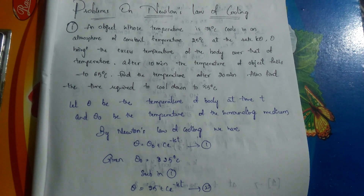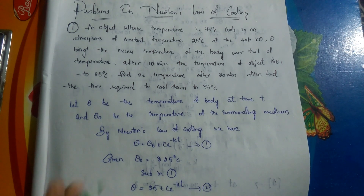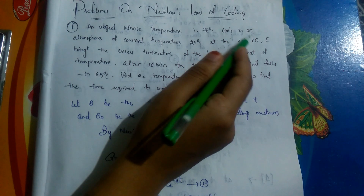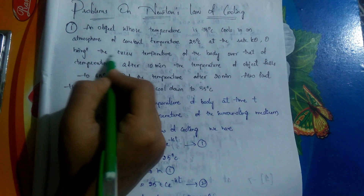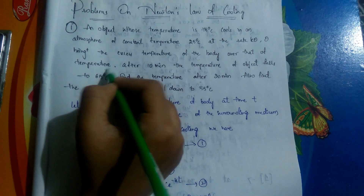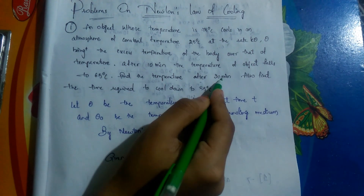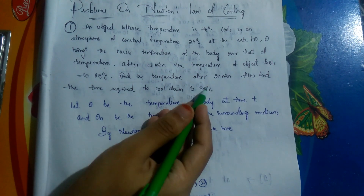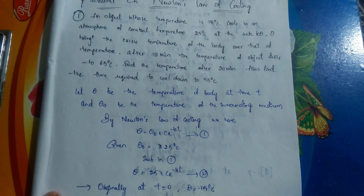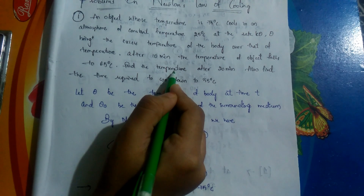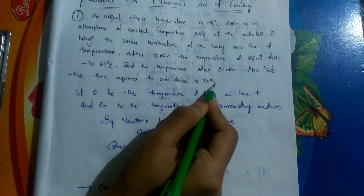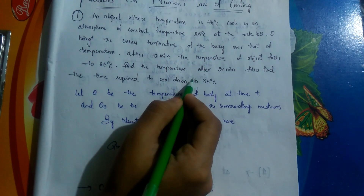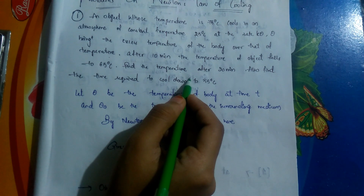Let's discuss a few more problems on Newton's Law of Cooling. An object whose temperature is 75°C cools in an atmosphere of constant temperature 25°C at the rate of k·θ, where θ is the excess temperature of the body. After 10 minutes the temperature falls to 65°C. Find the temperature after 20 minutes and also find the time required to cool down to 55°C.